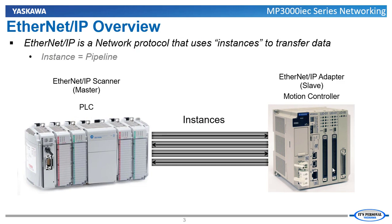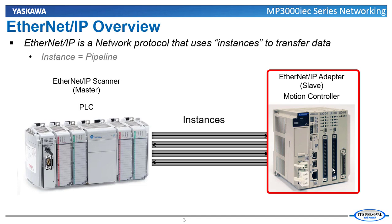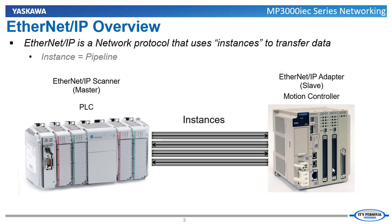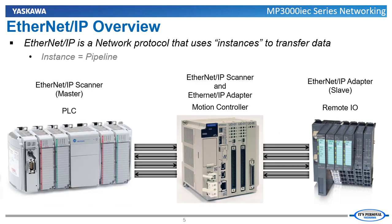Ethernet IP is a protocol that uses instances to communicate between scanner, otherwise known as a master, and adapter, otherwise known as a slave, devices. The MPIC controllers can either be set up as an adapter device, being controlled upstream by a PLC, or as a scanner device, which would control remote IO or other adapter devices. They can also be both the scanner and the adapter device at the same time.